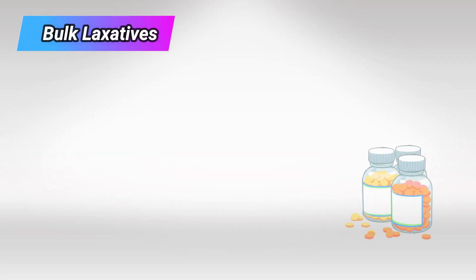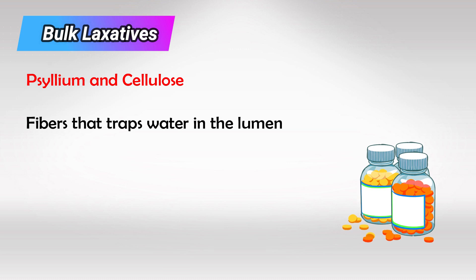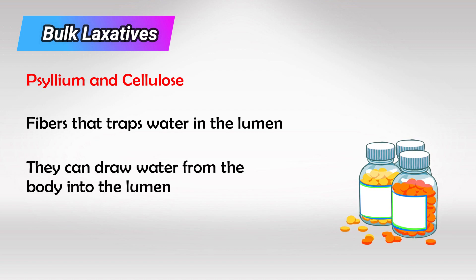The first group is bulk laxatives, like psyllium and cellulose-rich components. These are fibery components that trap the water in the intestine and prevent absorption. They also draw water from the GI system into the lumen, but in small amounts.